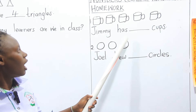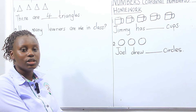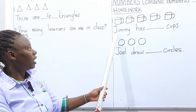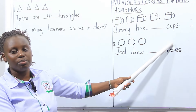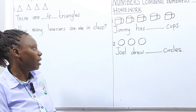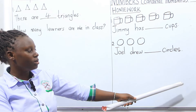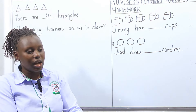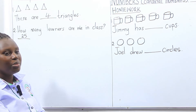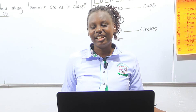We are having an exercise here — a homework that you will do at home and we will go through it during our next lesson. Number one: Jimmy has dash caps. Count how many caps Jimmy has and write the number. Question number two: John drew dash circles. Count the circles and write how many circles John has.